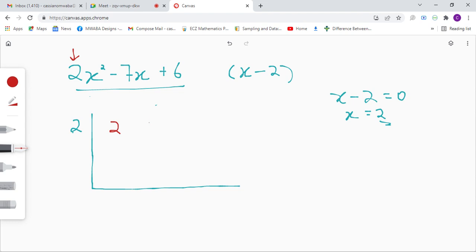So it's 2, negative 7, and 6. 6 is the constant. So what we're going to do is first we drop down this 2 here. I'm going to say 2 times 2, that is 4.